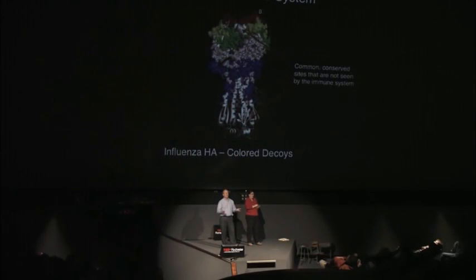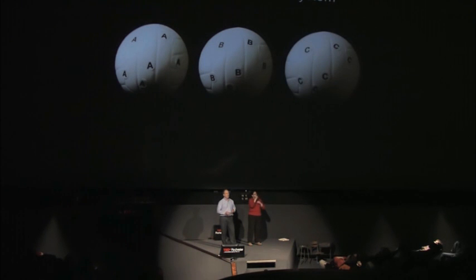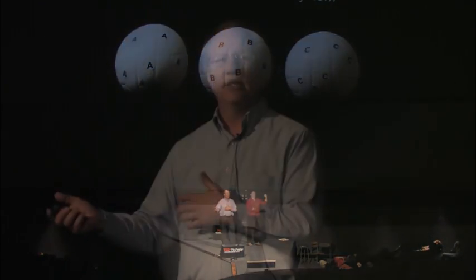So is there some way, some method we can come up with to understand this better? Let's pretend that these volleyballs are, in fact, influenza viruses. The first one, on the left, has an A on it, and then we have a B and a C. If you're infected with the A volleyball, you make a response to the A that is strain-restricted. So if you got immunized with the A virus last year and the B virus last week, you can still get infected with a C virus today.